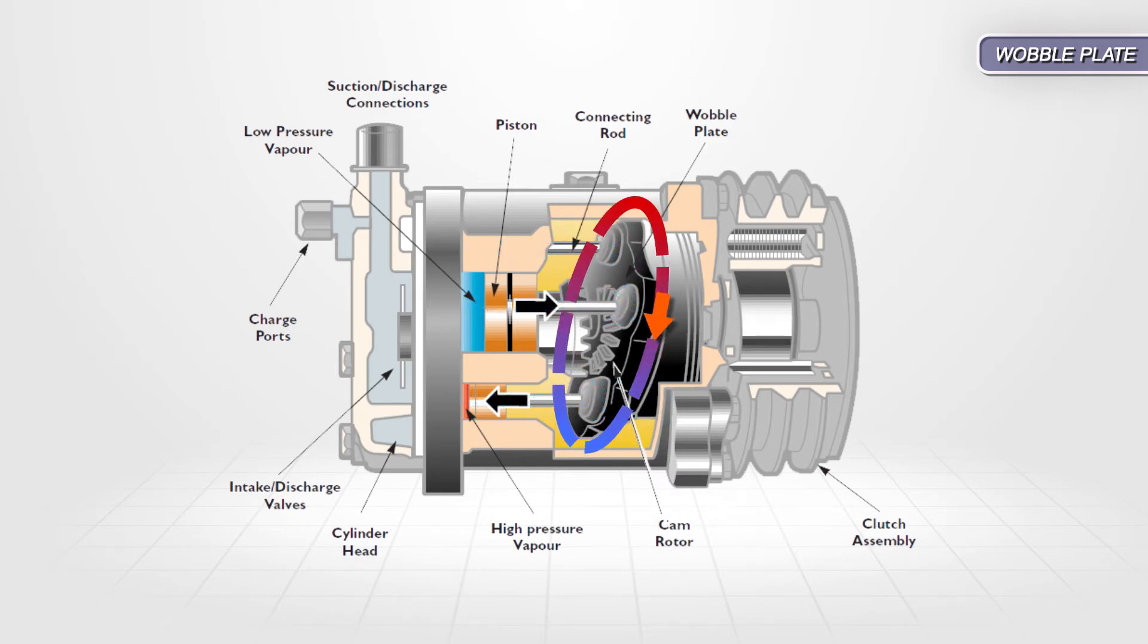Refrigerant vapor is drawn through a check valve and into the cylinder on the intake stroke. It is compressed and discharged to the condenser as a high pressure, high temperature vapor on the exhaust stroke.